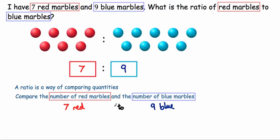And remember that the order of a ratio is important. Here we want to compare red marbles to blue marbles, so we need to put red first and then blue, separated like this by a colon.